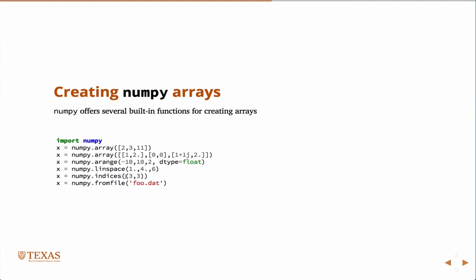I can create an indice array. So this would just be a three by three array that would have zero, one, two, zero, one, two, zero, one, two. Just a list of indices. And then also I can create something from a file. So if I have a file that's stored, an array that's stored in a file, I can read it in. So it gives you several ways to create arrays in that fashion.